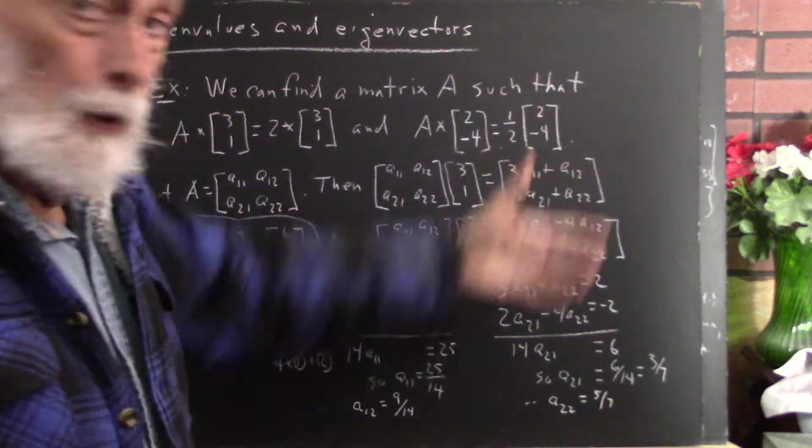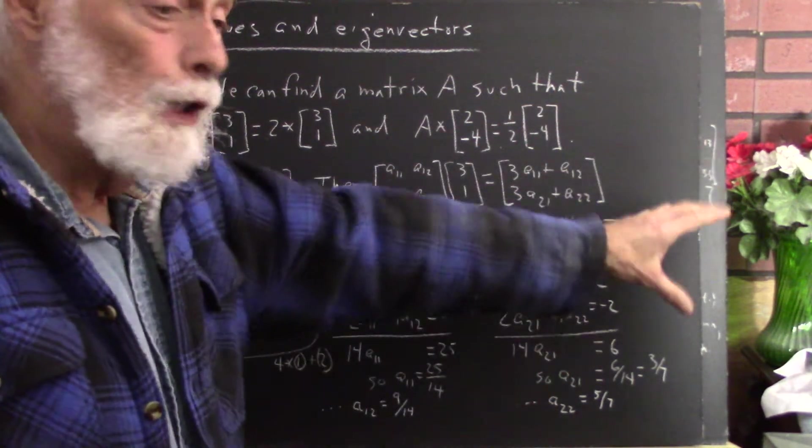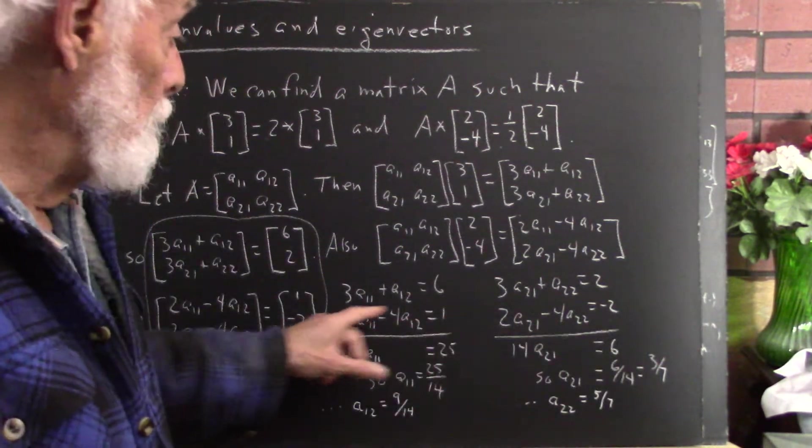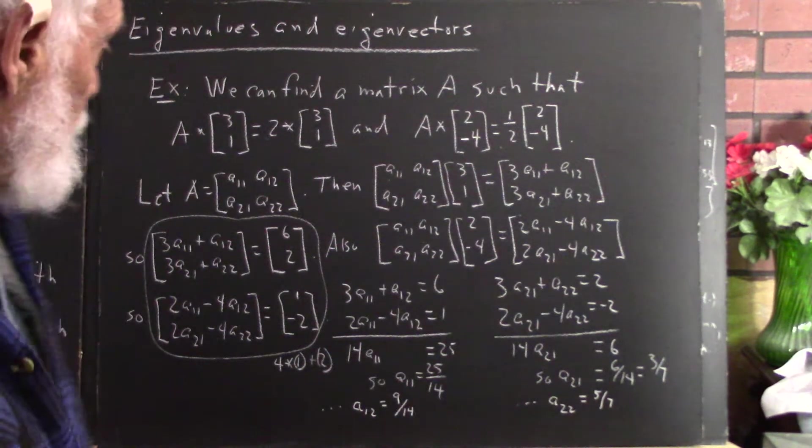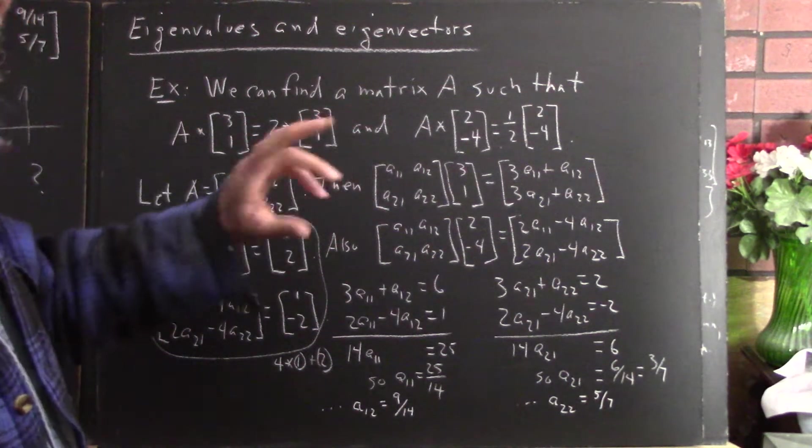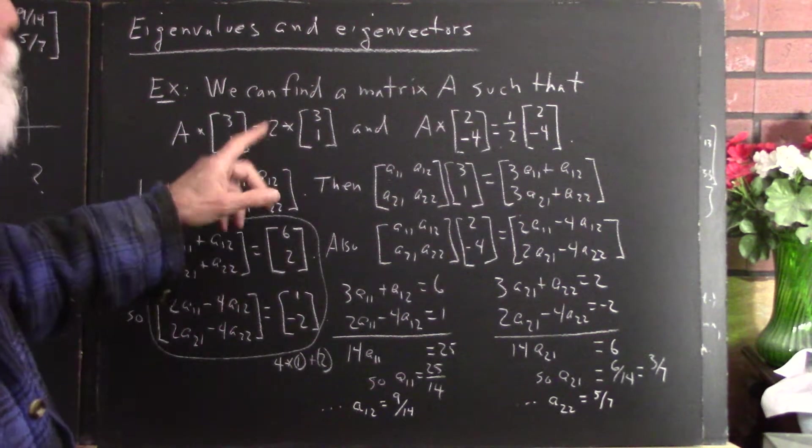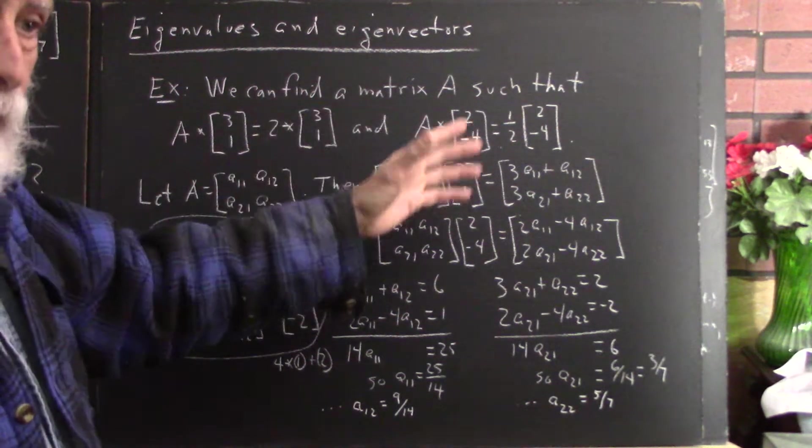We would have six equations if we had another vector. If we wanted to do this with another vector, we'd get two more equations, and those equations wouldn't be compatible with these. So we wouldn't be able to get a solution. So we're limited in two-dimensional space in R2 to two eigenvectors with their eigenvalues.